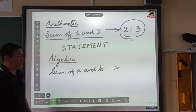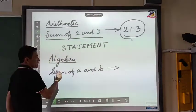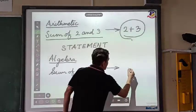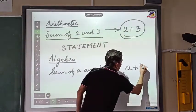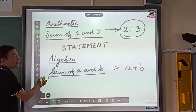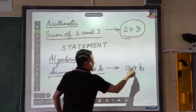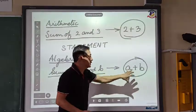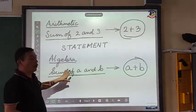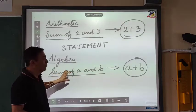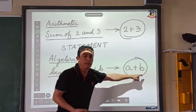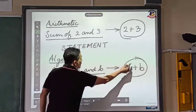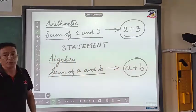Similarly, when it comes to algebra, suppose this is given to you: 'sum of a and b.' We convert that into a plus b. So this becomes the algebraic statement and this becomes the algebraic form. Sometimes the algebraic statement is given and we convert it into an algebraic form, or sometimes the algebraic form is given and we convert that into an algebraic statement.